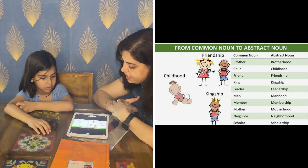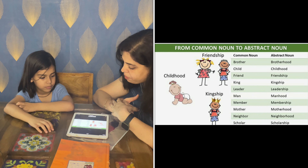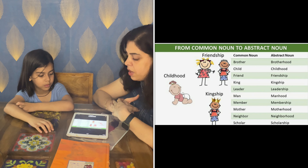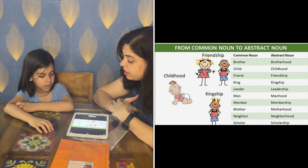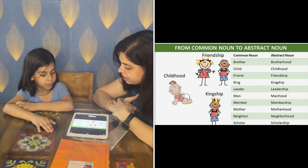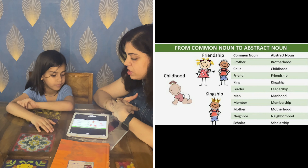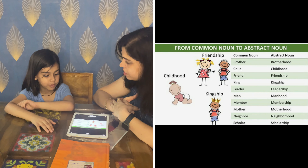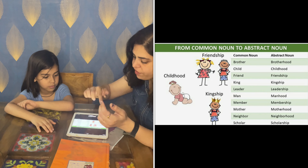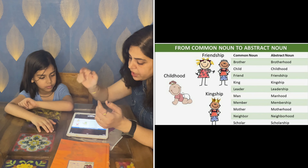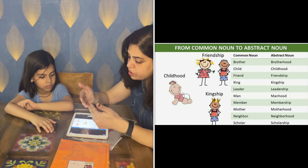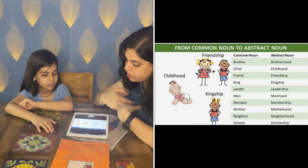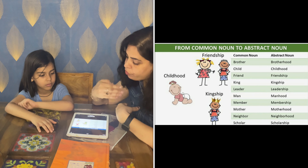The conversions are: brother → brotherhood, child → childhood, friend → friendship, king → kingship, leader → leadership, man → manhood, member → membership, mother → motherhood, neighbor → neighborhood, scholar → scholarship. Very nice!